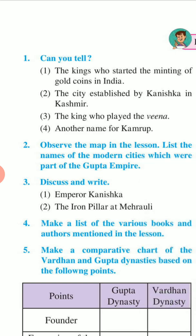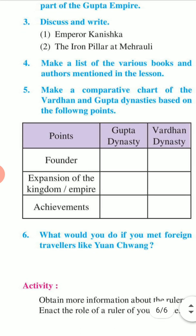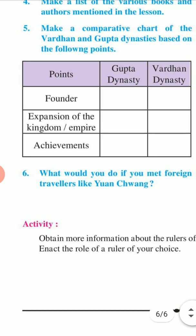Review questions: Can you name the kings who started the minting of gold coins in India? What was the city established by Kanishka in Kashmir? Which king played the vina? What is another name for Kamrupa? Observe the map in the lesson and list the names of modern cities which were part of the Gupta Empire. Discuss and write about Emperor Kanishka and the Iron Pillar at Mehrauli.